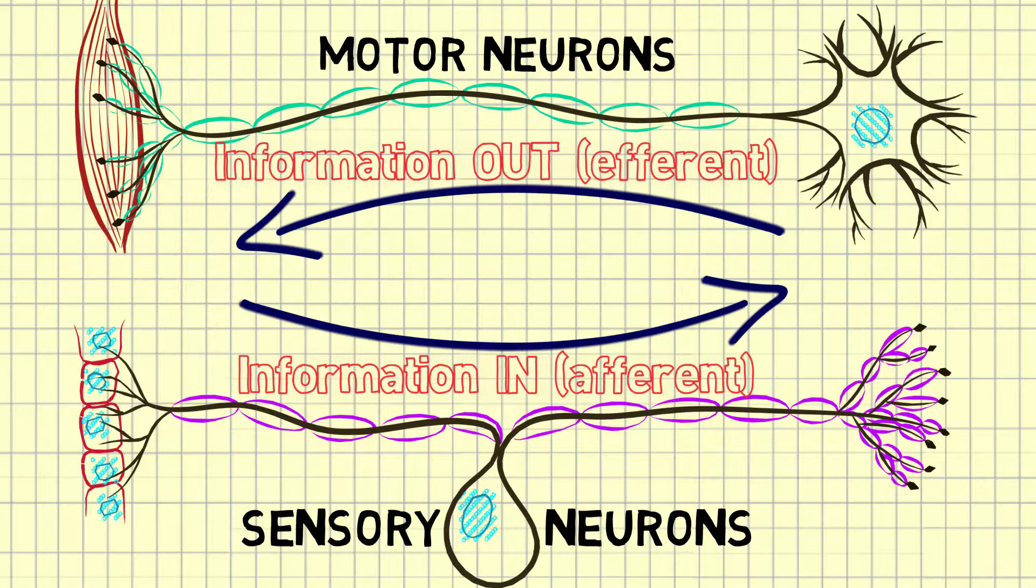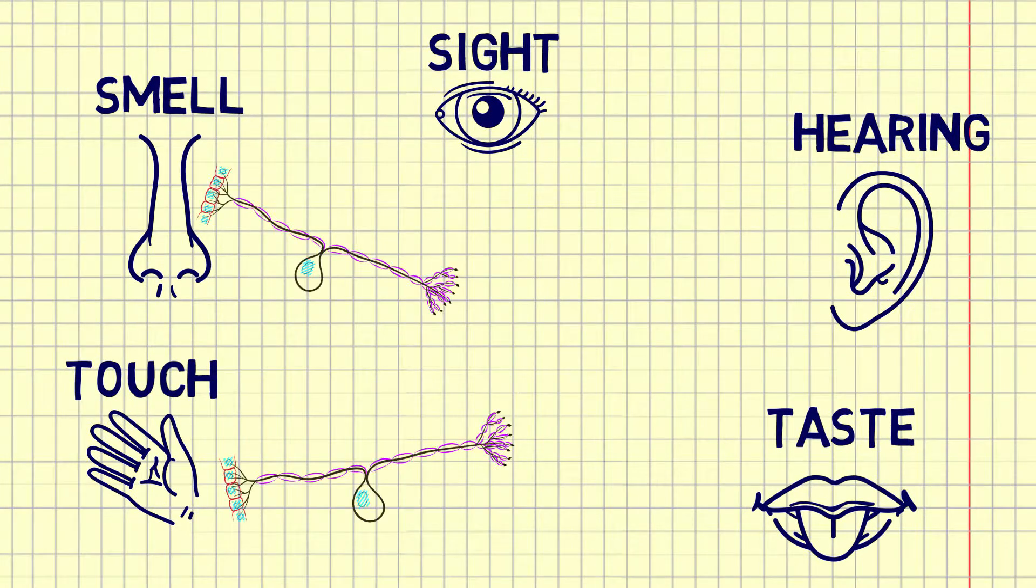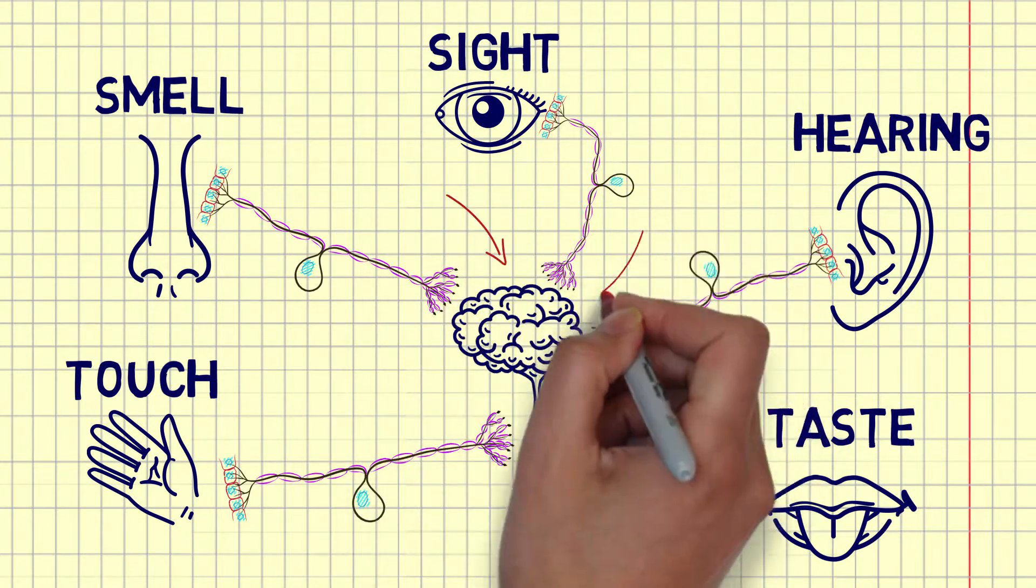Sensory neurons send information from our sensory organs to the central nervous system for processing.